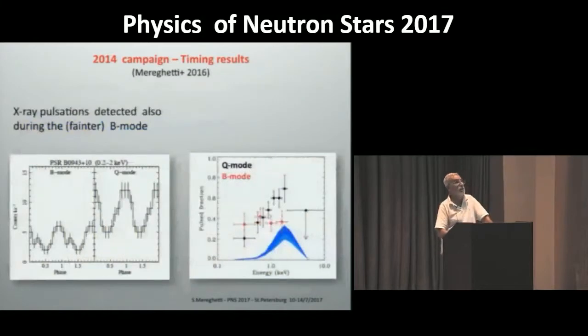So which were the main results of this new campaign? First of all, from the timing point of view, thanks to the longer observation and much higher statistics, we were able to see that also in the fainter B mode, pulsations in X-rays are present. And we could measure the pulse fraction as a function of energy for the B mode. They are rather steady within large errors, while in the Q mode, the pulse fraction increases with energy.